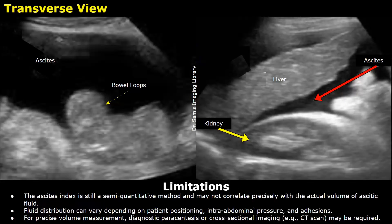The Ascites index may not correlate precisely with the actual volume of ascitic fluid. The patient's position, intra-abdominal pressure, or adhesions may affect ascitic fluid distribution in the abdominal cavity. Diagnostic paracentesis or a CT scan is more accurate in measuring ascitic fluid volume.